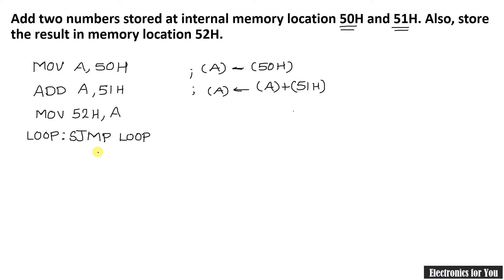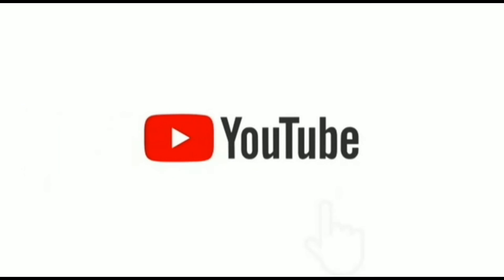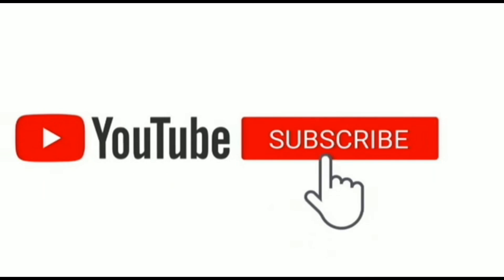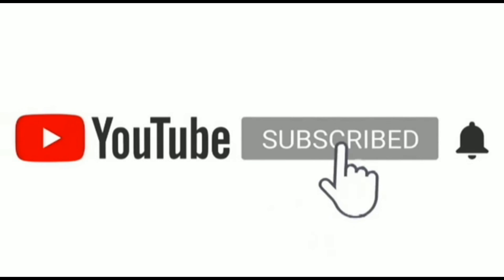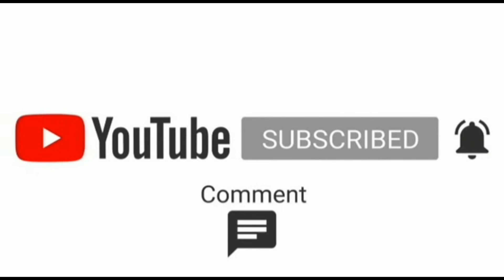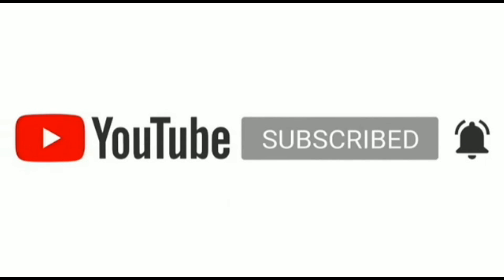In my next video I will explain the subtraction of two 8-bit numbers. The accumulator's result is stored at 52h — that's the end of this program. Friends, if you like this video please subscribe to our channel, press the bell icon for notifications, and like, comment, and share. Thank you.